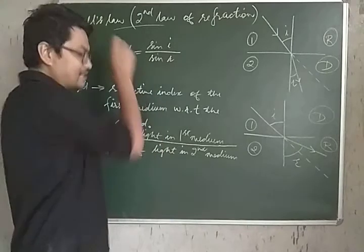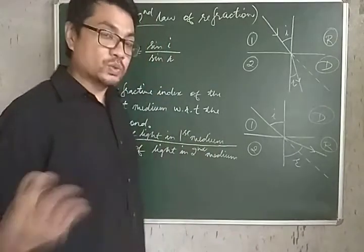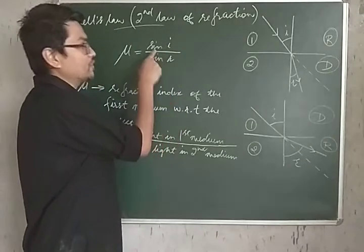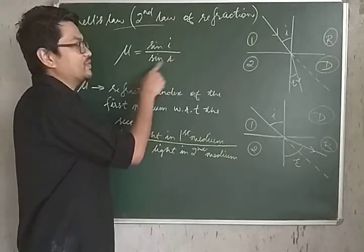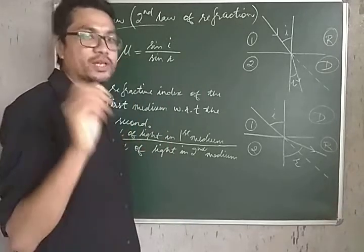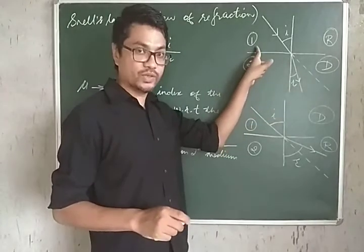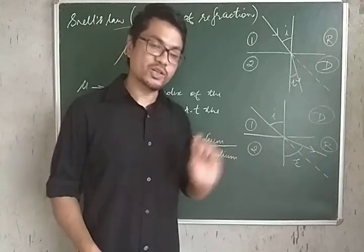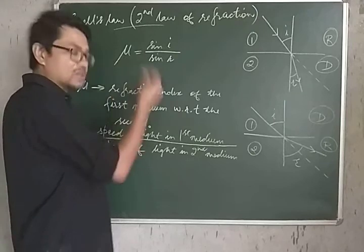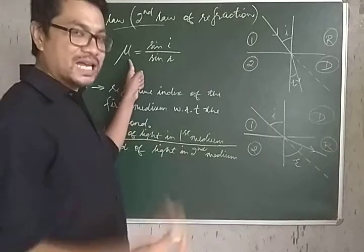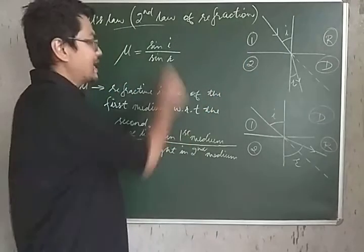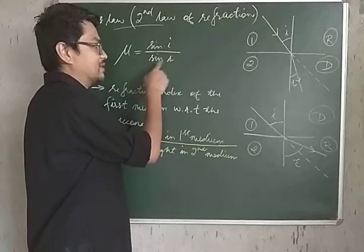The second law of refraction we spoke about is more of a mathematical statement. The statement is: the ratio of the sine of angle of incidence to the sine of angle of refraction is a constant. This constant is called the refractive index of the second medium with respect to the first. It is denoted by this Greek letter mu, and mu equals sine of angle of incidence divided by sine of angle of refraction.